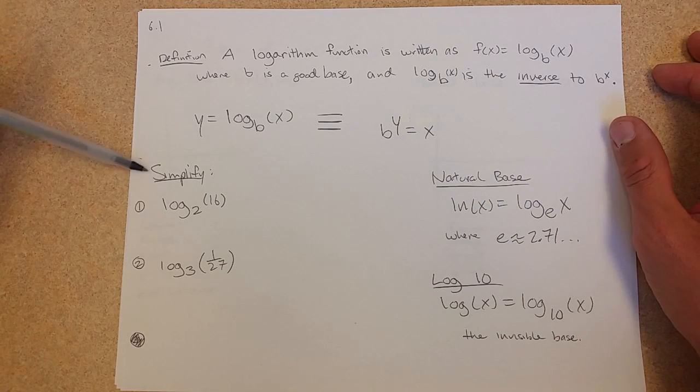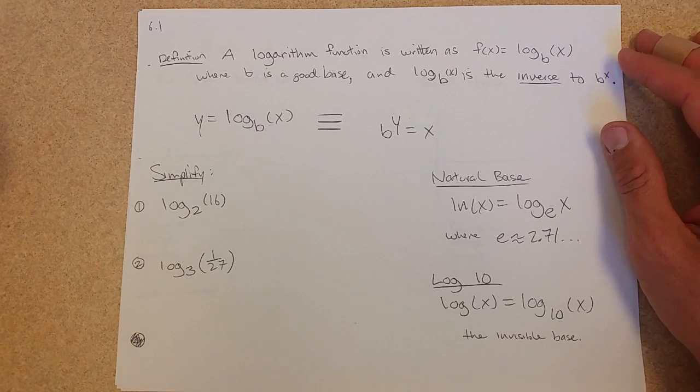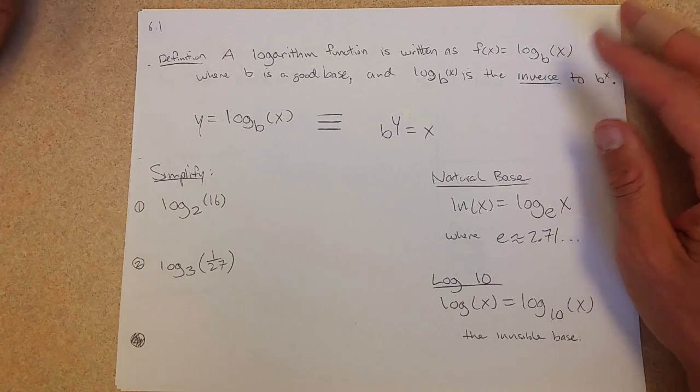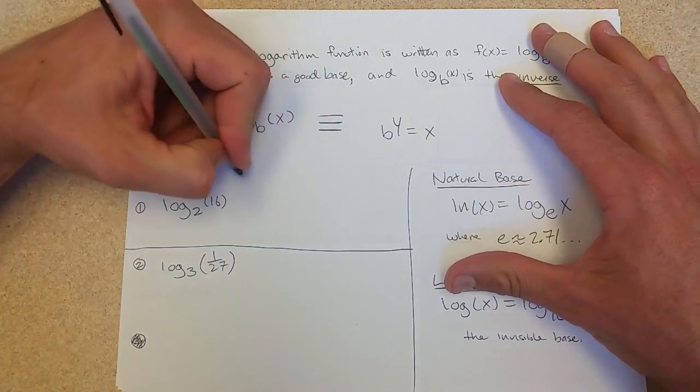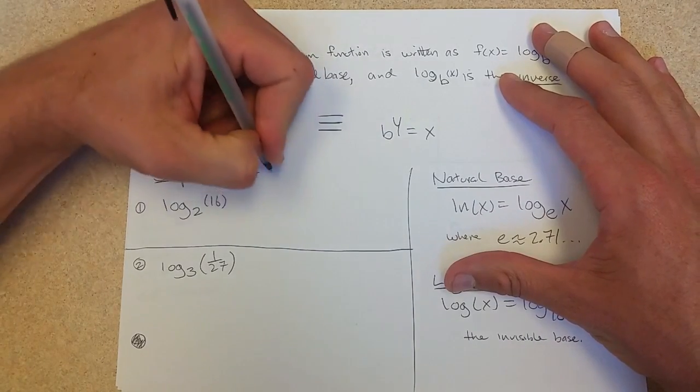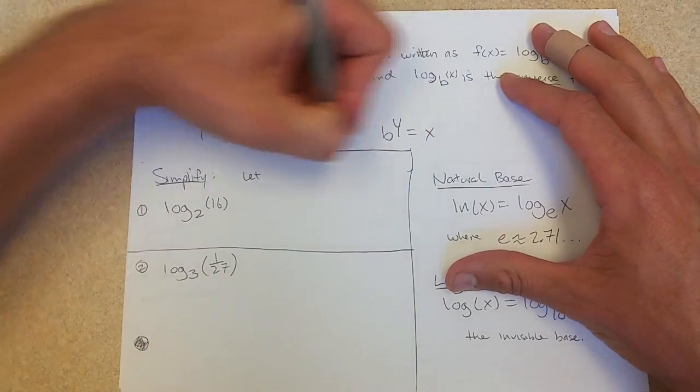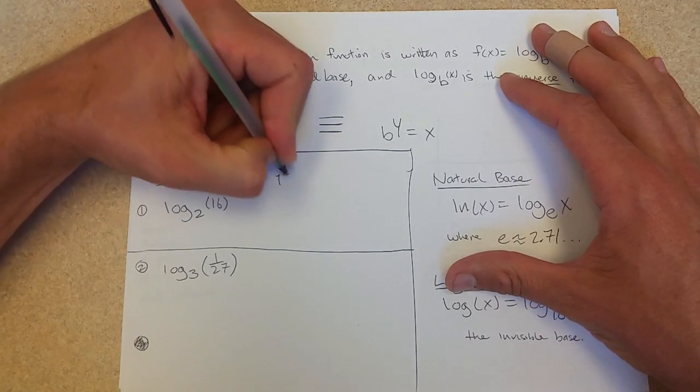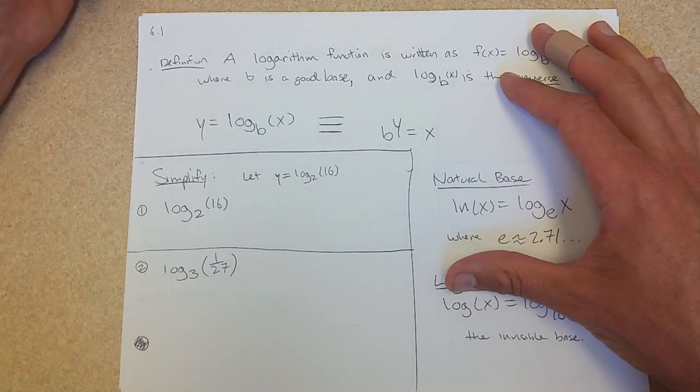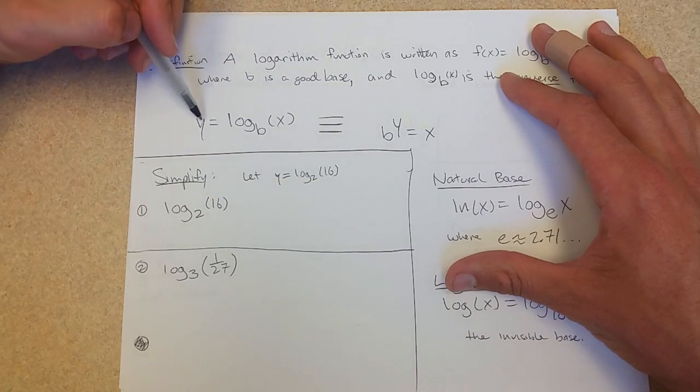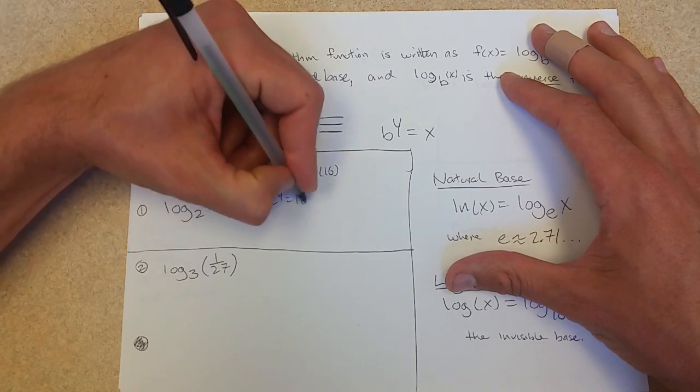I'm going to do some examples where we simplify. We'll do log base 2 of 16. The way I like to do these problems is let y equal log base 2 of 16. We're going to flip this around, so the base jumps to the other side: 2 to the y equals 16.